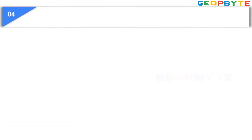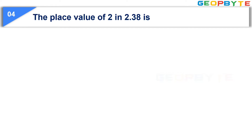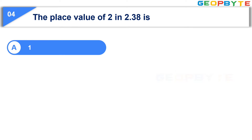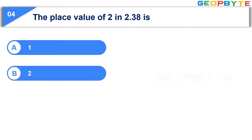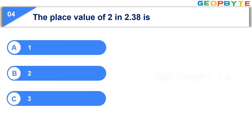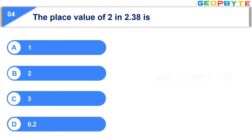Now let us see the next question. The place value of 2 in 2.38 is: option A, 1; option B, 2; option C, 3; option D, 0.2. Your time starts now.